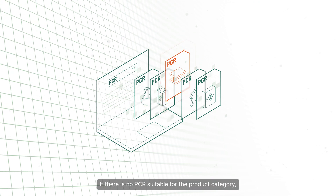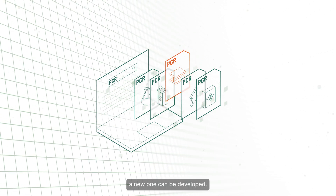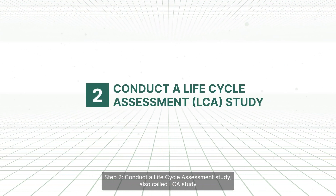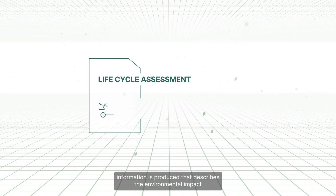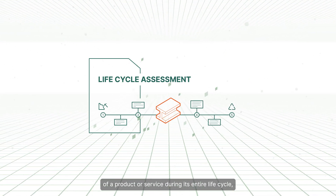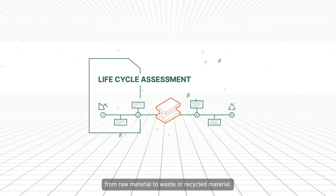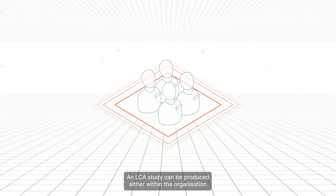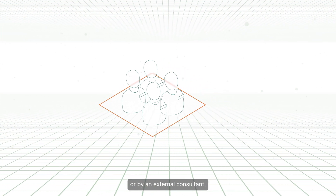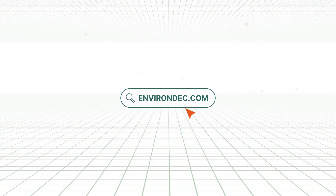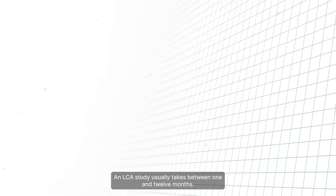If there is no PCR suitable for the product category, a new one can be developed. Step 2: Conduct a life cycle assessment study, also called LCA study. Through an LCA study, information is produced that describes the environmental impact of a product or service during its entire life cycle, from raw material to waste or recycled material. An LCA study can be produced either within the organisation or by an external consultant. External consultants are listed on our website. An LCA study usually takes between 1 and 12 months.